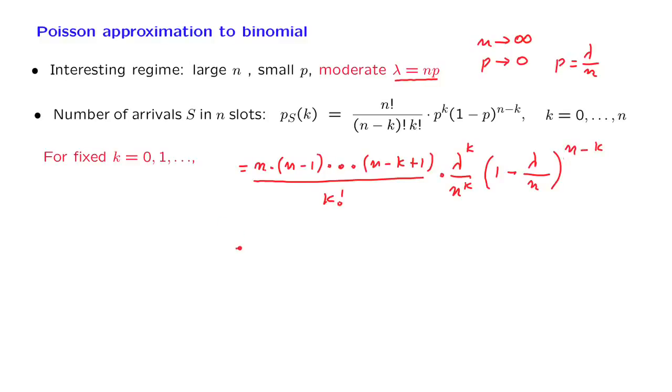Now let us rearrange terms. Here we have a product of k terms in the numerator. Here we have n multiplying itself k times. So we can take a factor of n and place it underneath each one of those terms to obtain n over n times n minus 1 over n, and we continue this way, all the way to n minus k plus 1 divided by n.